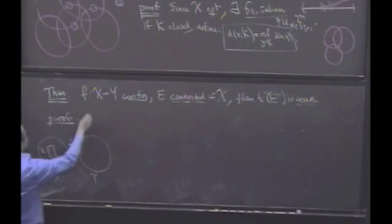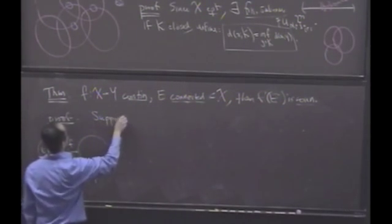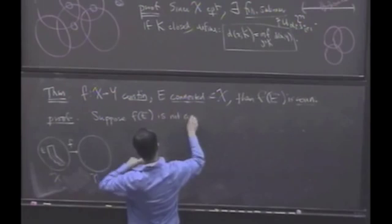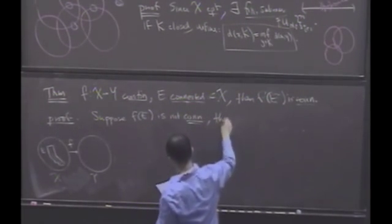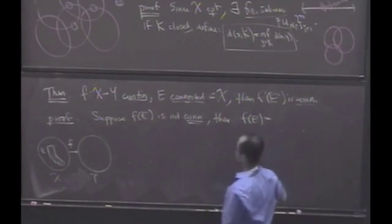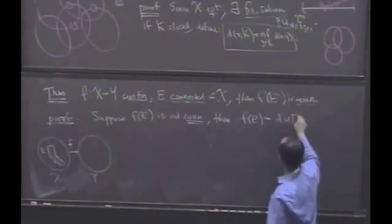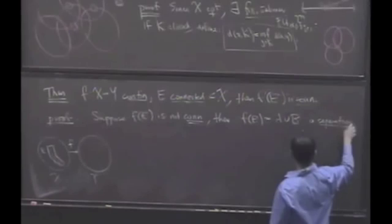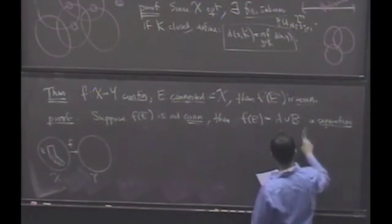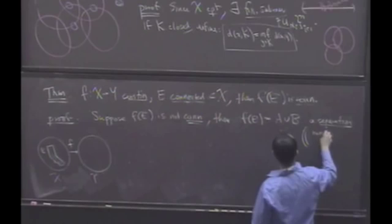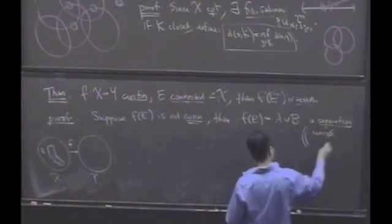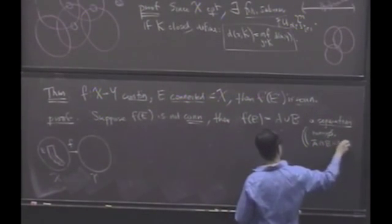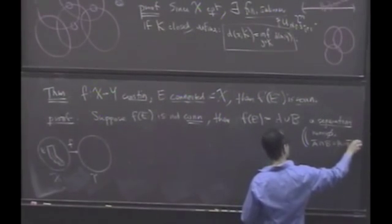Suppose f(E) is not connected. That means f(E) is separated — it's the union of two separated sets. We say there is a separation, and of course a separation means the sets are not empty, and the closure of A intersected with B, and A intersected with the closure of B, are both empty.